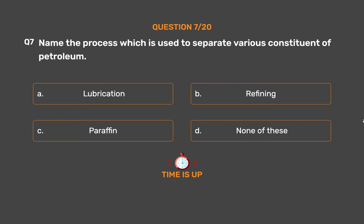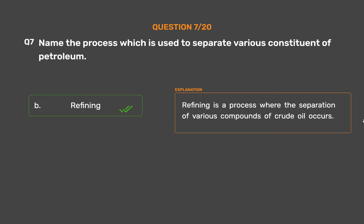The correct answer is Option B: Refining. Refining is a process where the separation of various compounds of crude oil occurs.